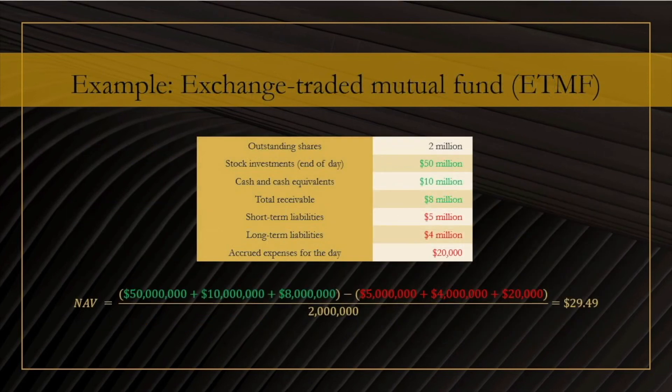Let us now look at an example where the NAV approach is very commonly used — an exchange-traded mutual fund. In the table, I listed the number of shares outstanding at 2 million, and also included a list of company assets and company liabilities. Combining all of these financial data gives the NAV of $29.49 per share.